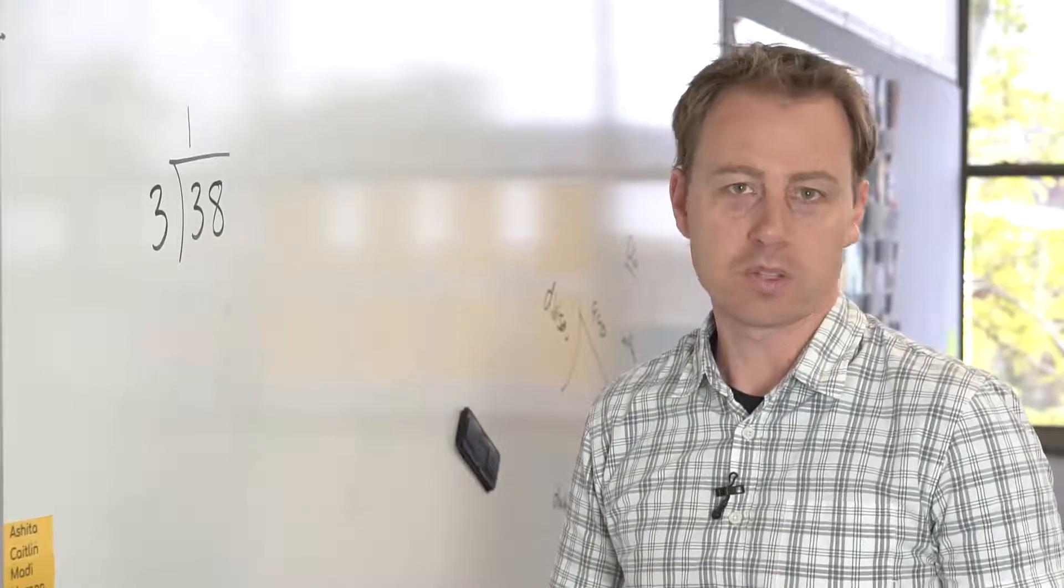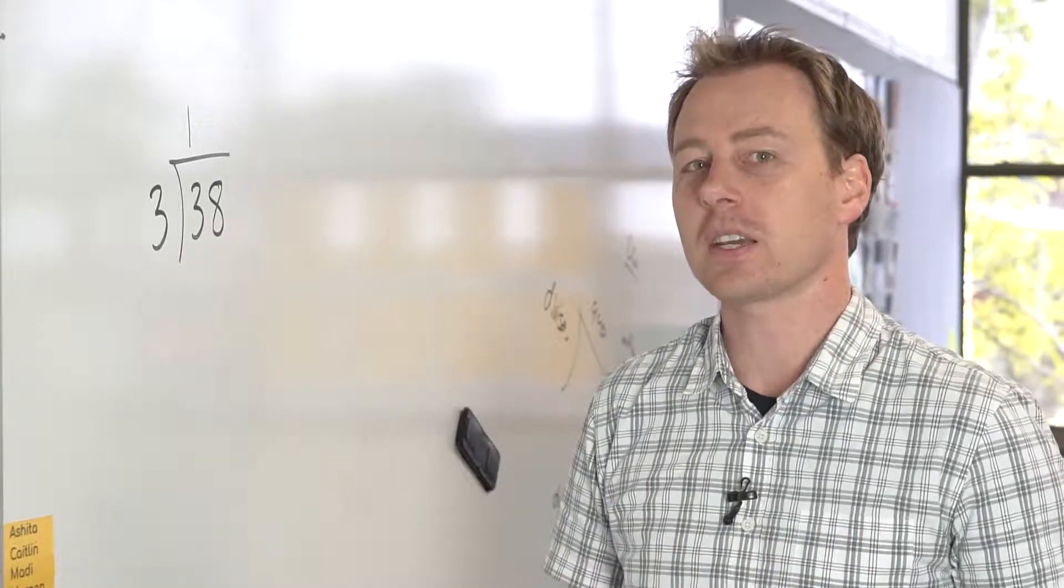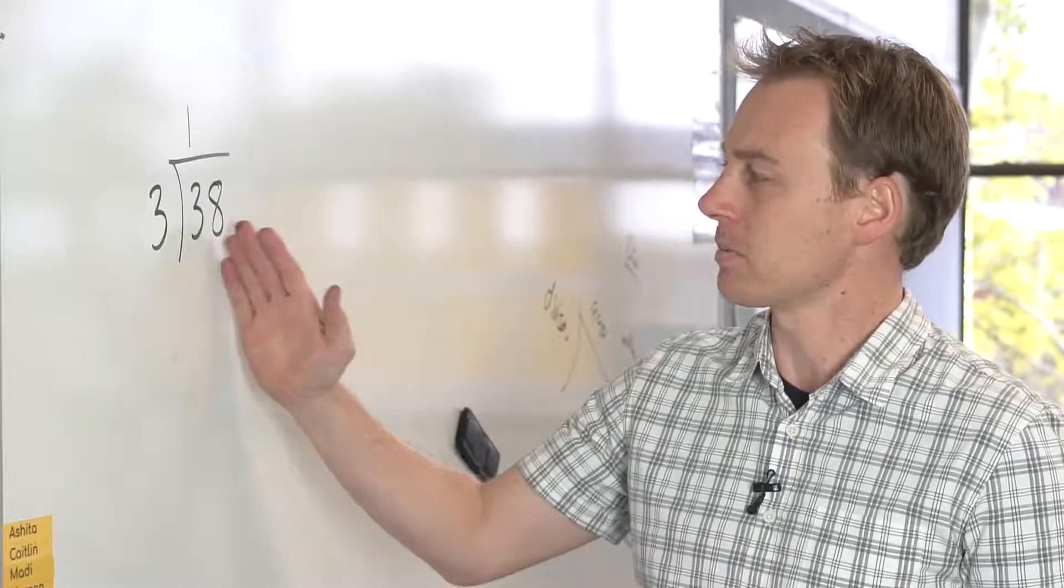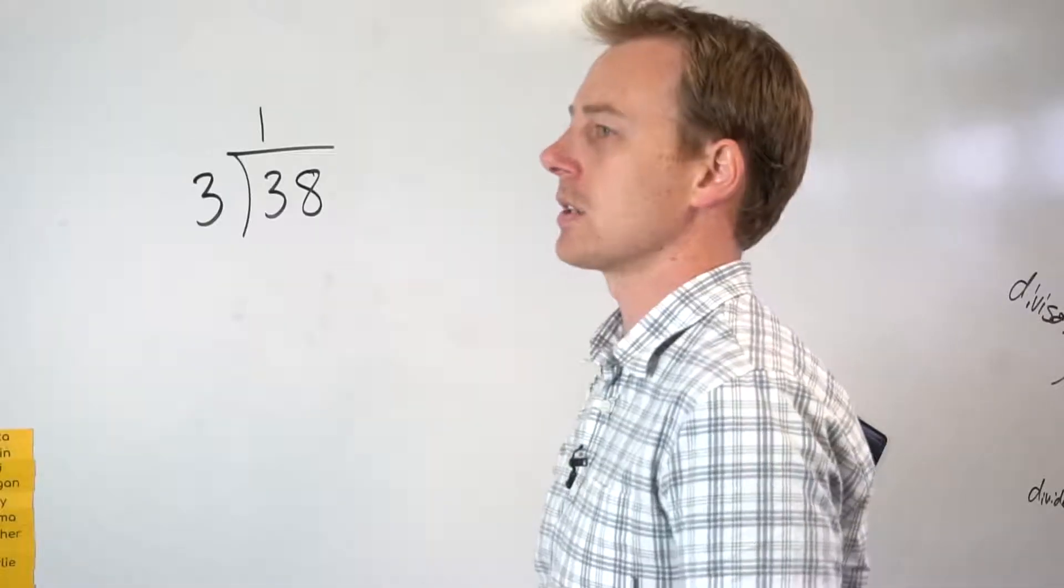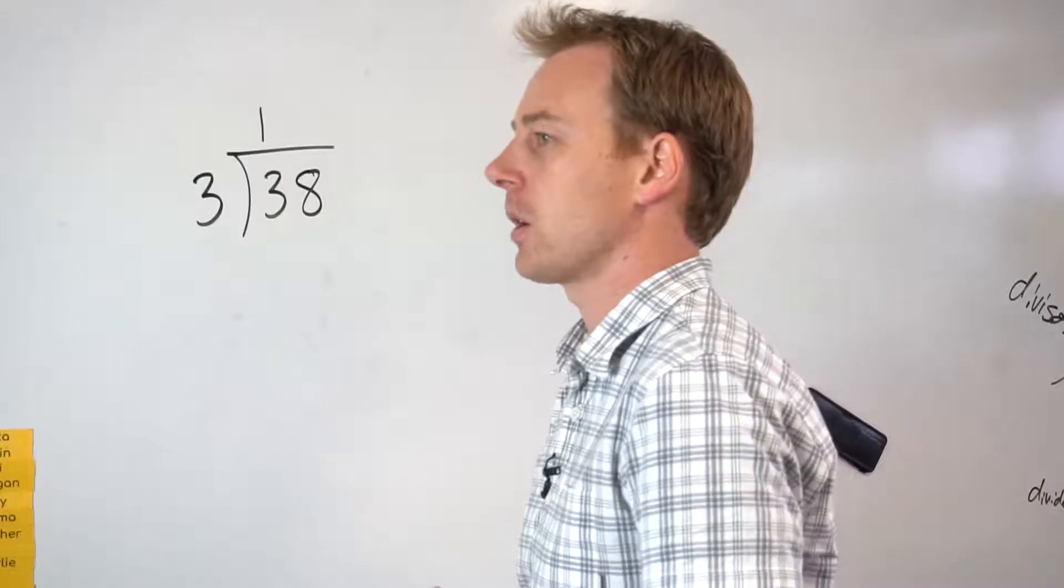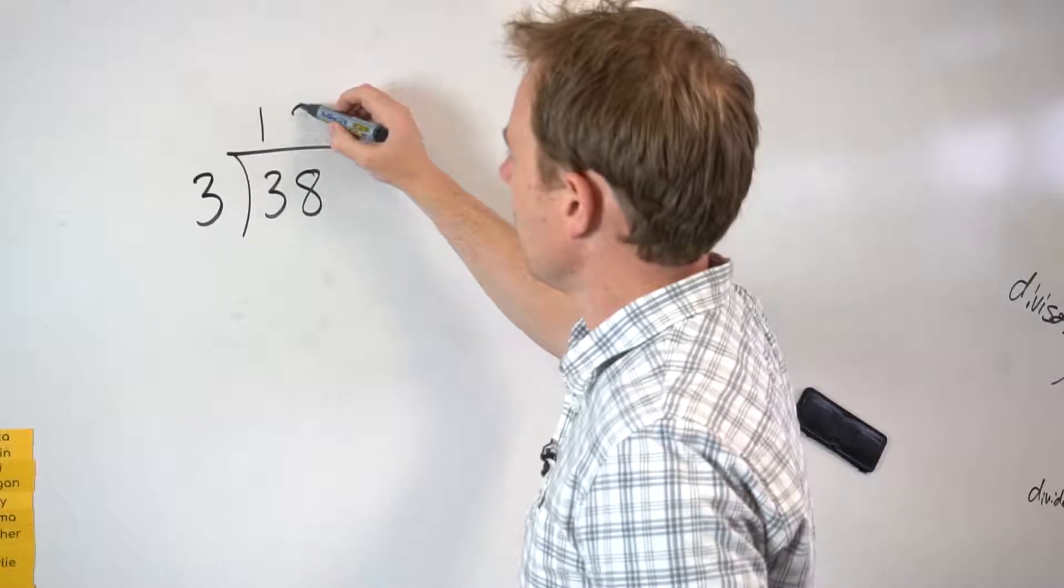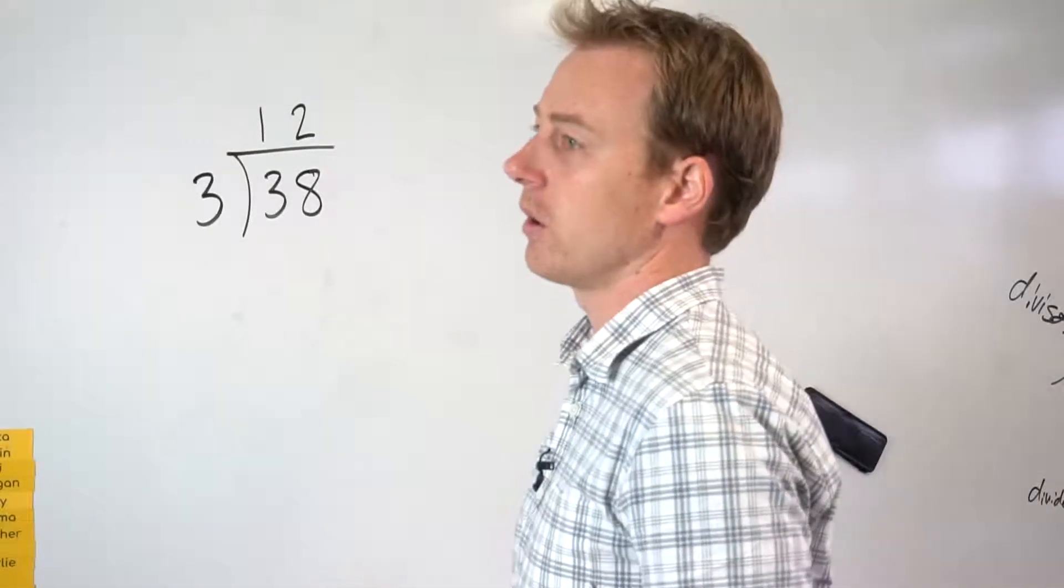This highlights the importance of students knowing their multiplication facts, where they would know, well, 6 divided by 3 is 2, and this is bigger than 6, but it doesn't quite get to the next increment in the 3 times tables, which is 9. So I know that 8 divided by 3 will give me 2, and there's 2 left over.